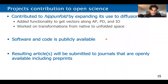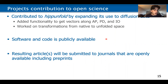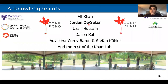This project contributed directly to the open source HipUnfold by expanding its use to diffusion data. I also added functionality to get vectors along the AP, PD, and IO directions, and worked on transformations from native to unfolded space. All software and code is publicly available on GitHub and at hipunfold.readthedocs.io, and any resulting articles will be submitted to openly available journals, including preprints, to further the mission of open science. I'd like to acknowledge Ali Khan, Jordan DeKraker, Azair Husain, Jason Kai, my advisors Corey Baron and Stefan Kohler, the rest of the Khan Lab, and CONP for funding this work. Thank you for listening.